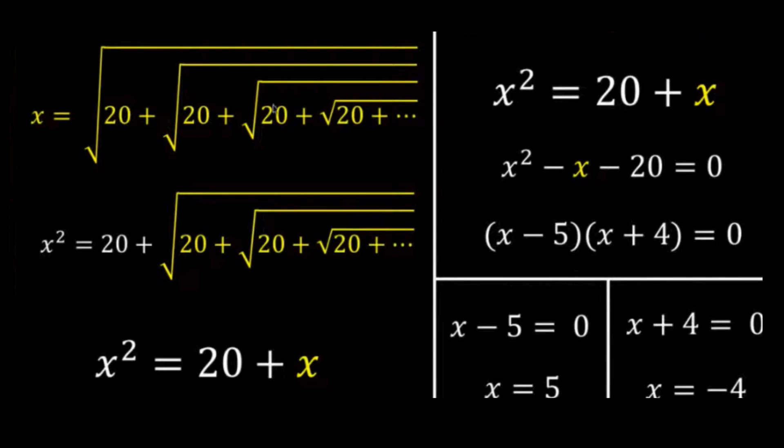But going back to the original given expression, 20 is positive and you are getting the principal square root and the operation is addition—there is no way for this number to become negative. So we will only consider x equals positive 5 as the answer. This x equals negative 4 is extraneous, so the only answer is x equals 5.